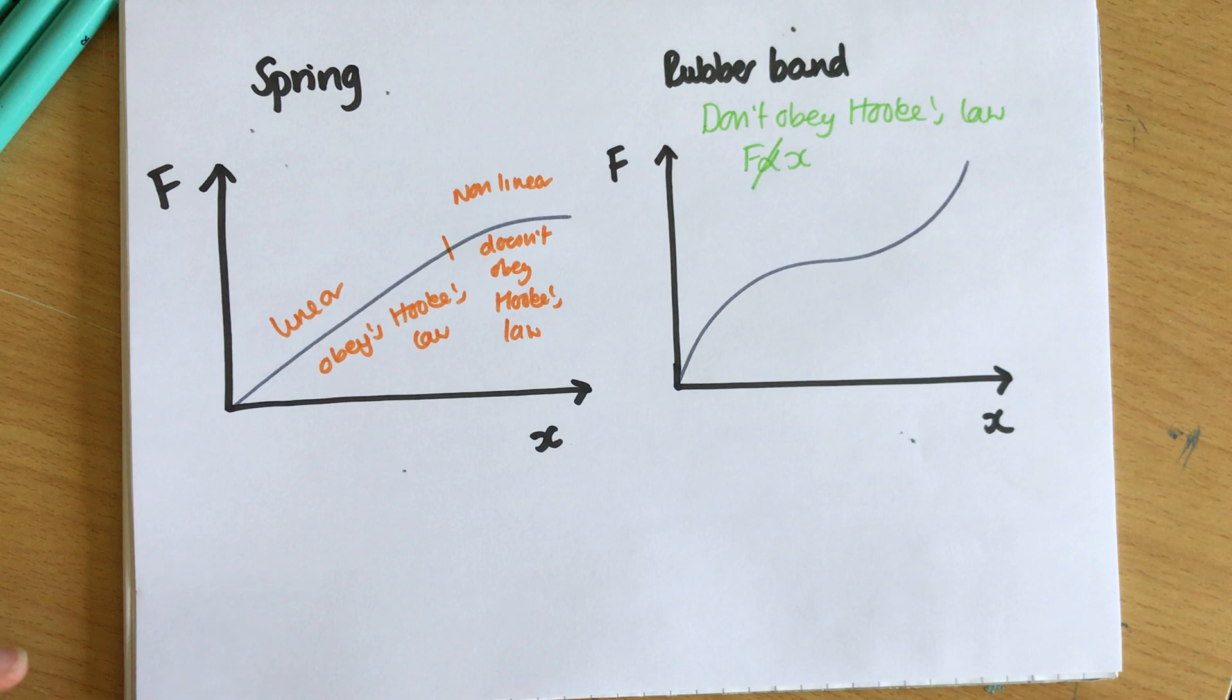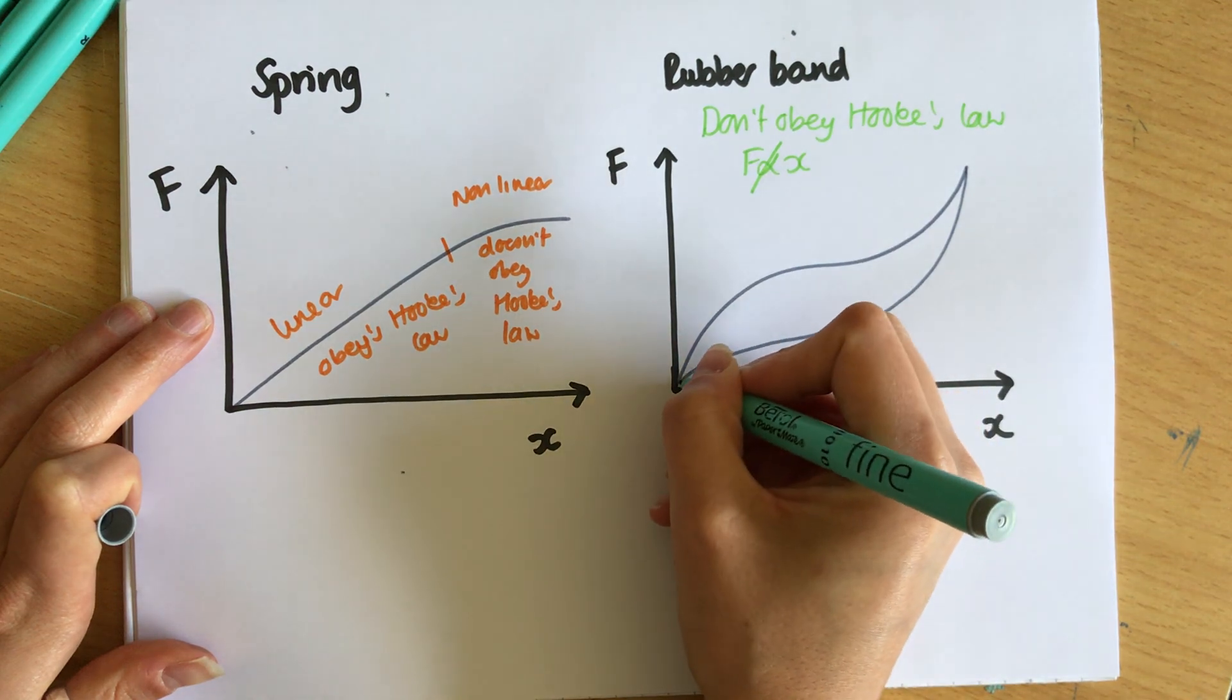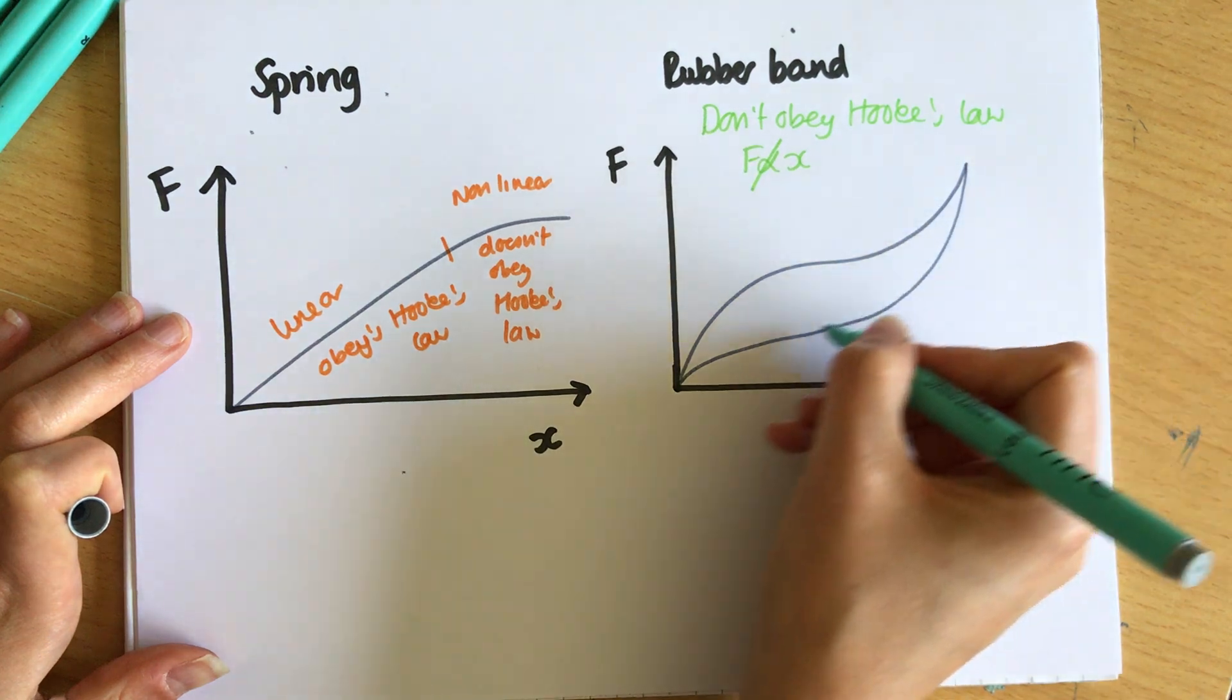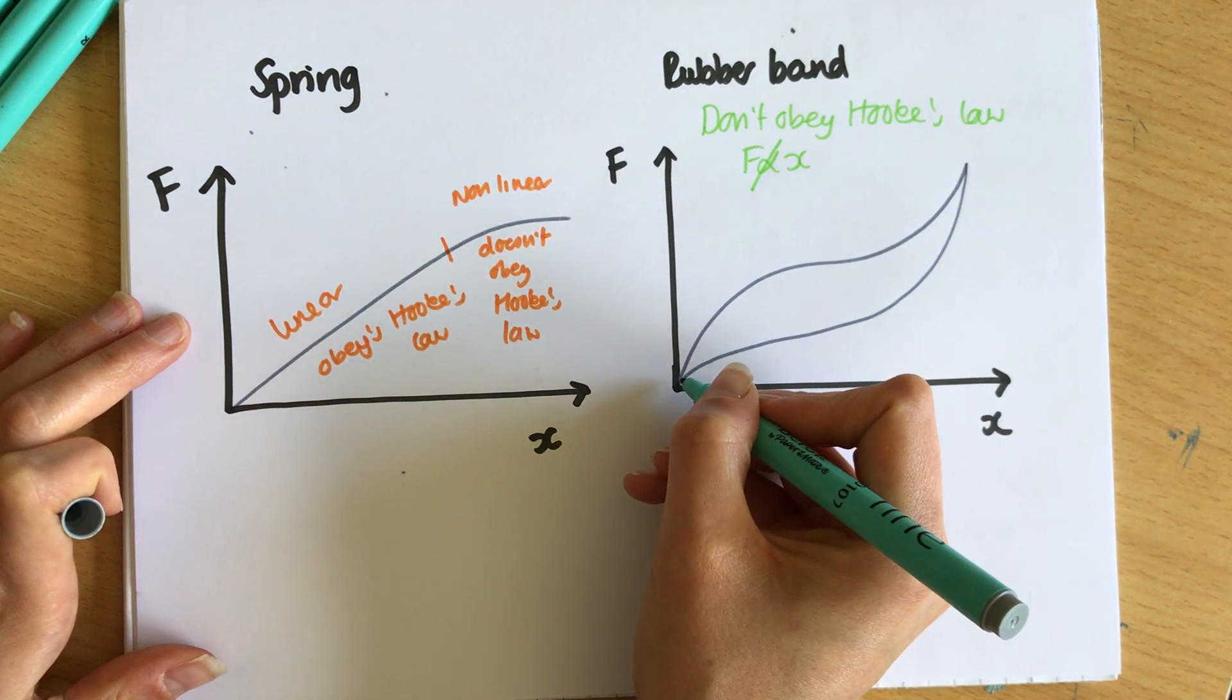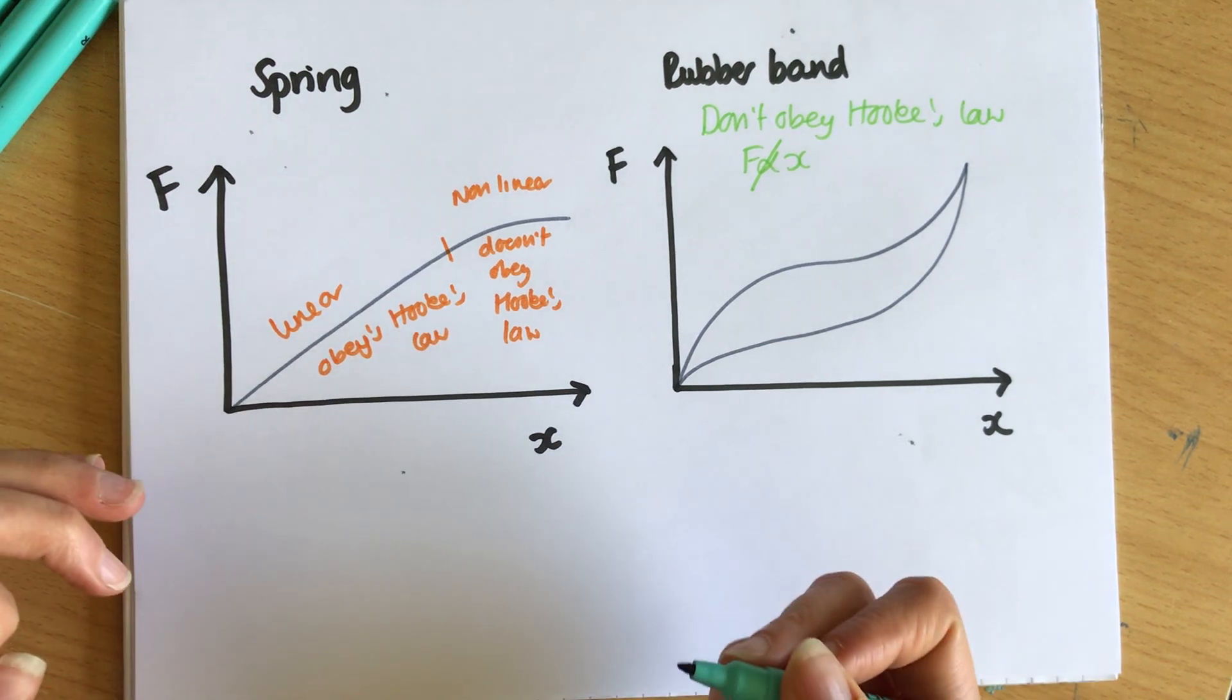However that doesn't mean they're not elastic because when you take the load off—so when you then remove the masses—you often get this kind of thing going on. It's called a hysteresis curve, you come across it in year 12. But the rubber band will go back to where it used to be, so it still is elastic because it goes back to the same shape.